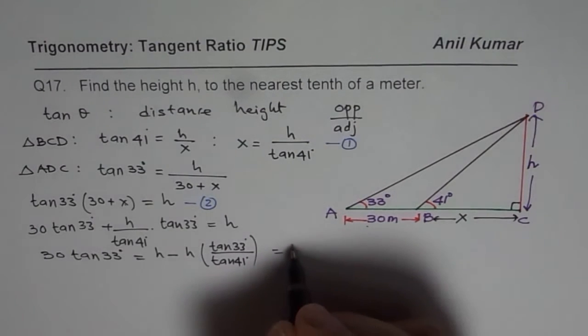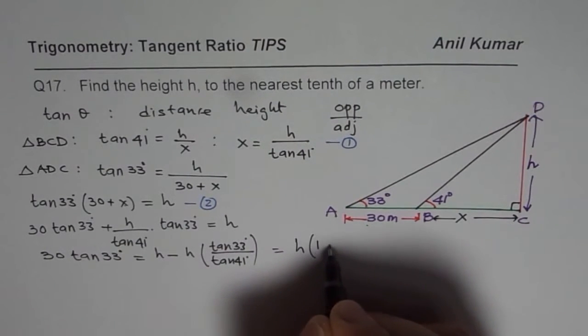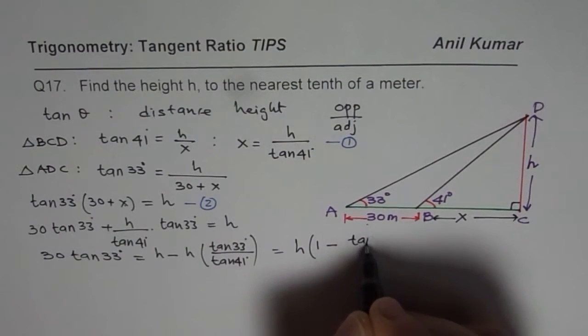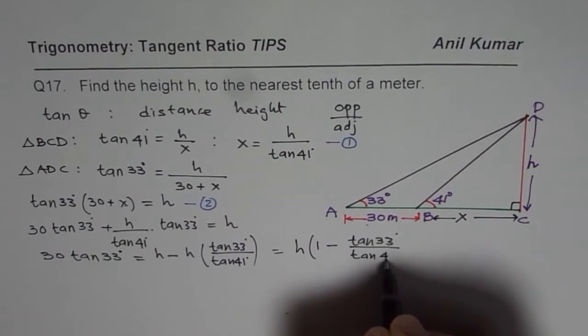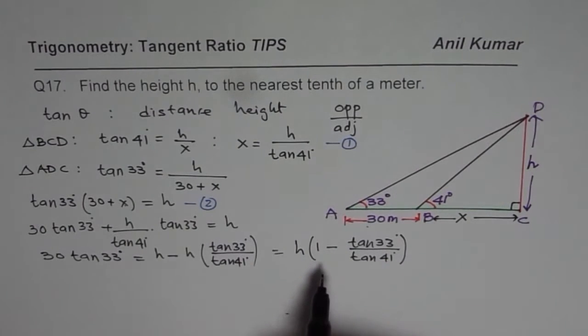Here I can take h common, and we have 1 minus (tan 33°)/(tan 41°).